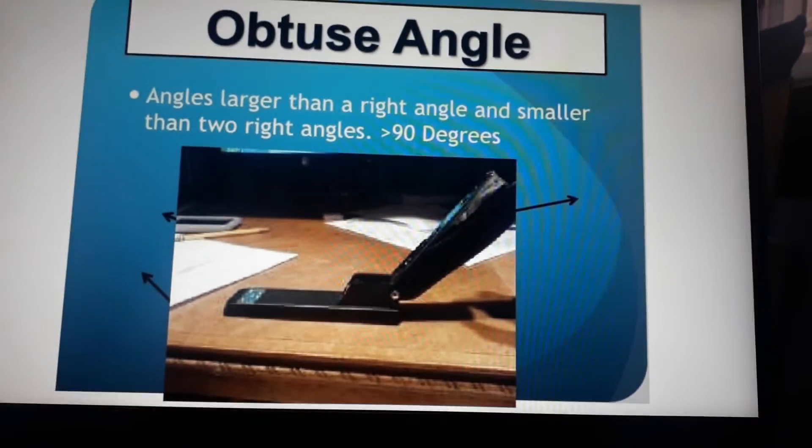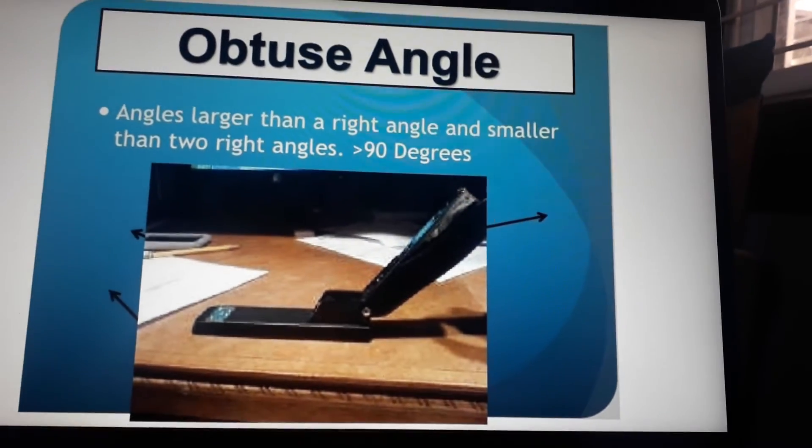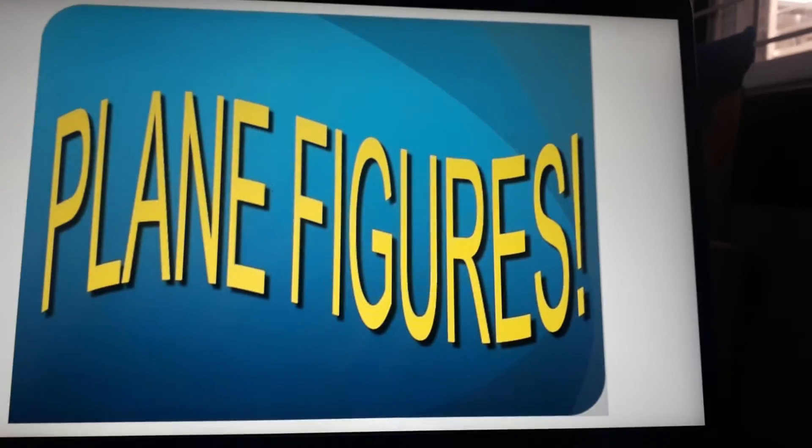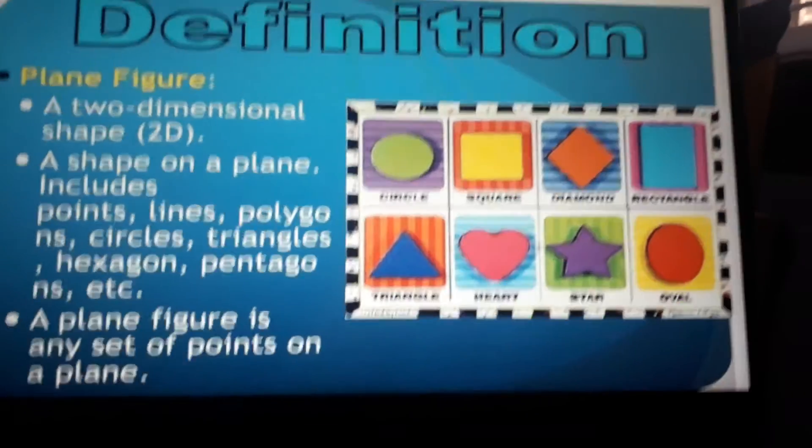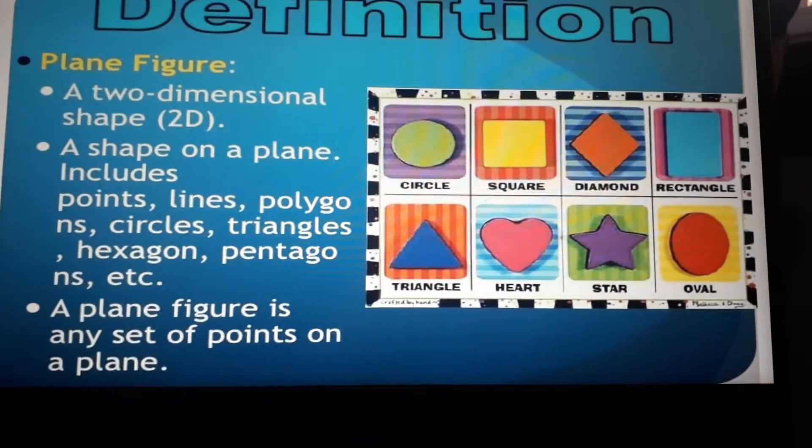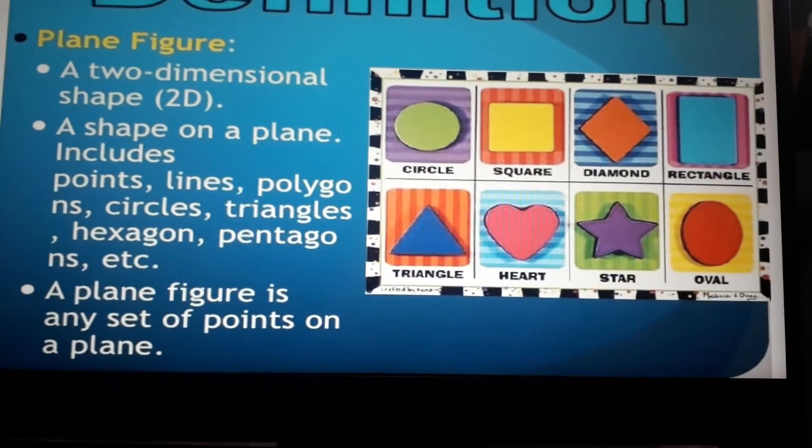Plane figures definition: plane figures are two-dimensional shapes, also called 2D. A plane shape on a plane includes points, lines, polygons, circles, triangles, hexagons, pentagons, etc. A plane figure is any set of points on a plane.